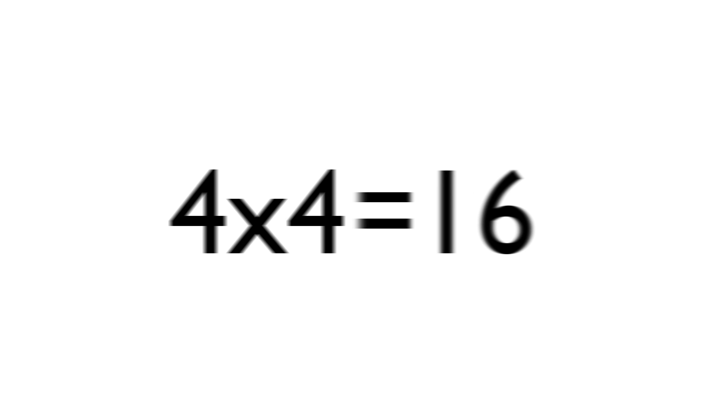If you square a number, you basically multiply it by itself. So, for example, 4 squared is 4 times 4, which equals 16.